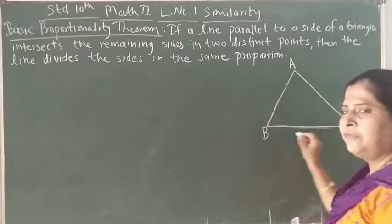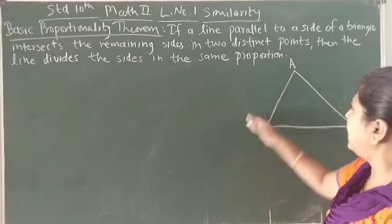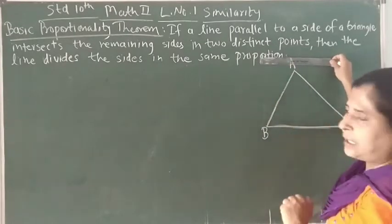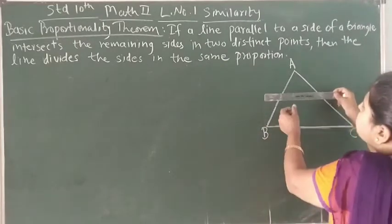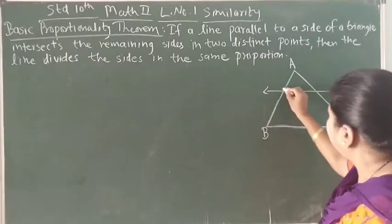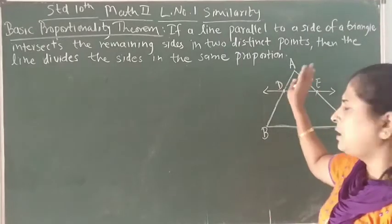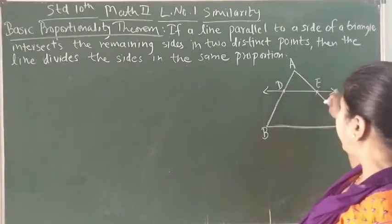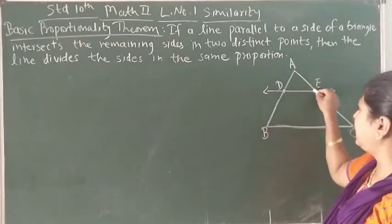So if we are taking side BC — generally we take the base — and we draw one line which is parallel to BC, it intersects the remaining sides AB and AC in two distinct points. We cannot draw the line outside the triangle where it does not intersect AB and AC, and we cannot draw it through vertex A either. We have to draw it somewhere between A and the base BC. This line we can name with points D and E — D on AB and E on AC. You can give any name like PQ or DE.